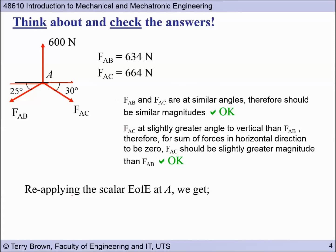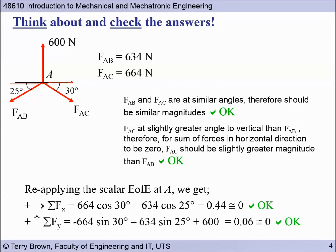What else can we do to check? We can reapply the equations of equilibrium. So if we put in our answers back into the equations, we can see that we've done our simultaneous equations correctly if this comes out to be equal to zero. So we've got a bit of a non-zero basically due to our round off error. Same again by reapplying in the Y equation of equilibrium.